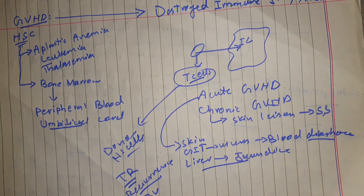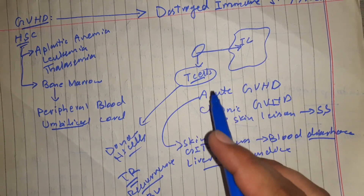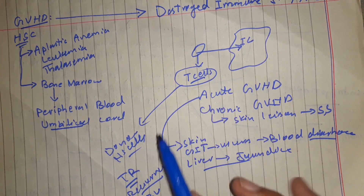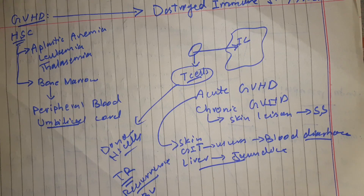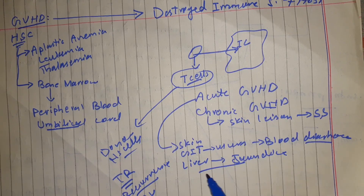Additionally, the risk of Epstein-Barr virus and other viral infections also increases. So T-cell eradication reduces the risk of graft versus host disease on one side, while on the other hand it leads to recurrence of leukemia, Epstein-Barr virus infection, or graft rejection — making it a dual phenomenon.